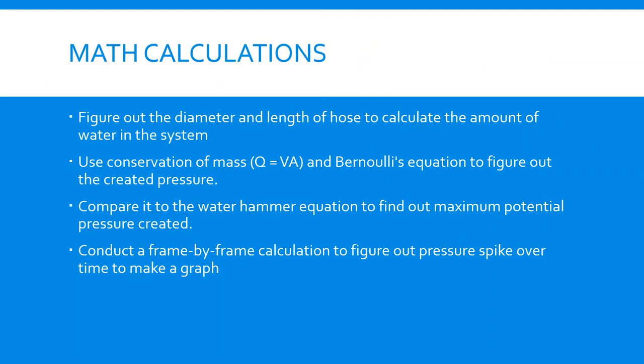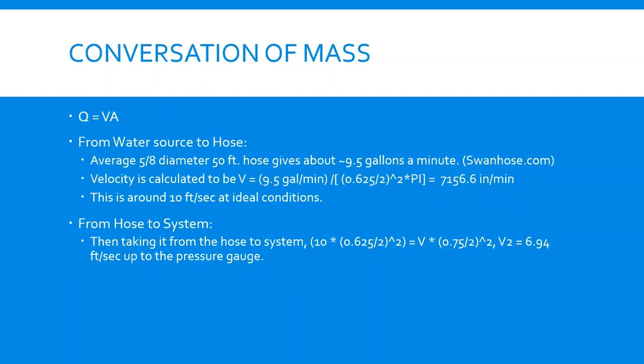Here's our plan for the math. We'll take our measurements and use conservation of mass to solve Bernoulli's equation to find the pressure. We'll compare it to the water hammer equation we found online to find a maximum potential pressure created. And then we'll analyze our real-life experiment by conducting a frame-by-frame analysis. We'll take statistics found online to find the average gallons per minute of a hose, and then use conservation of mass to find the velocity of water inside our system.